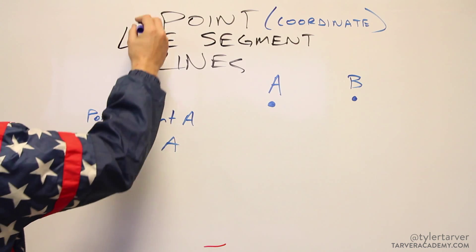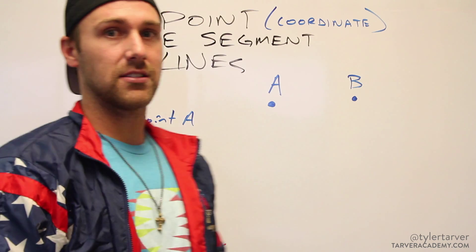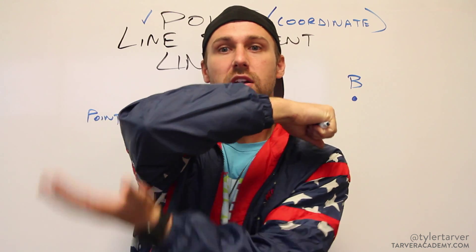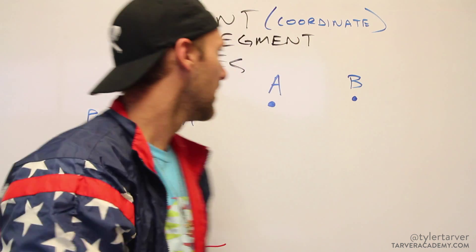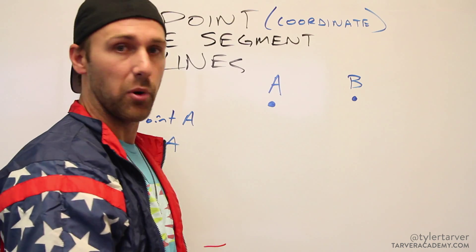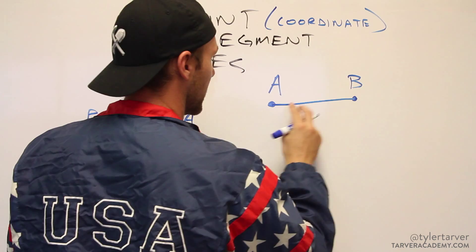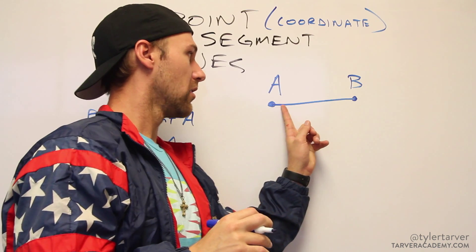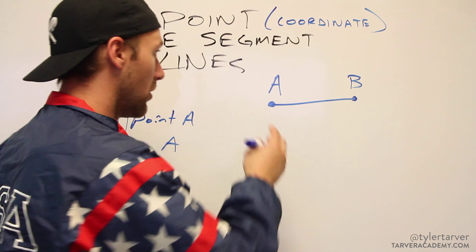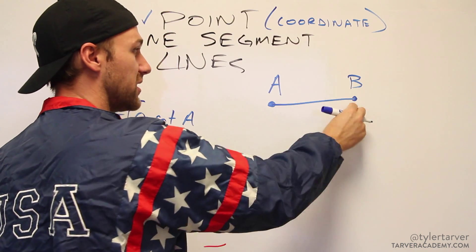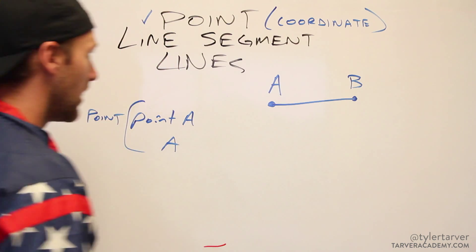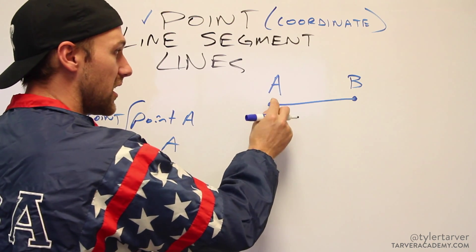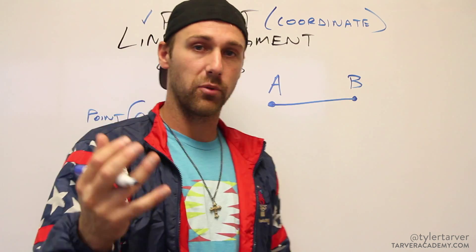The next thing we want to look at is line segments. If something is a segment, that means it has a clear beginning and end. It has an endpoint on each end and it's filled in with a line. So if I want to make a line segment out of these two points, I would just connect them — it's supposed to be straight from there to there. A line is essentially a compilation of points all the way across. That is a line segment. When labeling a line segment, we label it from one endpoint to the other.